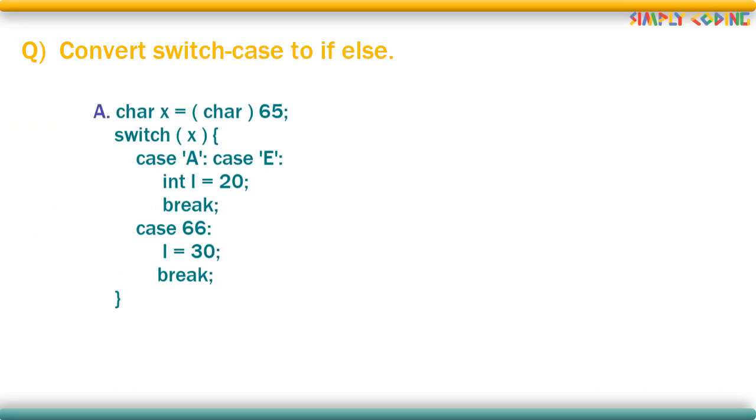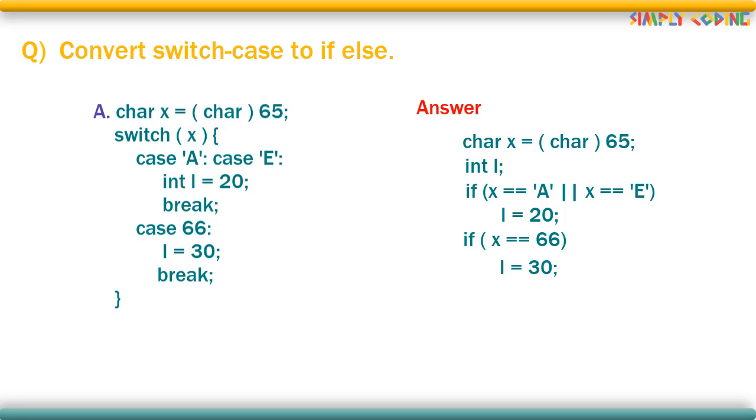Let's see some reverse questions where you have to convert switch to if else. Let's take this first question. Here before writing if, first what we will do is directly take any statements before and after switch as is in your answer. Next if there are any variables declared inside switch which are used in more than one case statement, they need to be moved out of switch. So you will add int l2 before you start writing the if block. Now you will write the if statement for each case. Where there are multiple cases executing the same statements like case a and e, you can just use or in your if. So the first statement will be if x equal to equal to a or x equal to equal to e. Inside this if statement you will just set l to 20. Next you will write if x is equal to 66 and in that case set l to 30. This is your answer for first question.